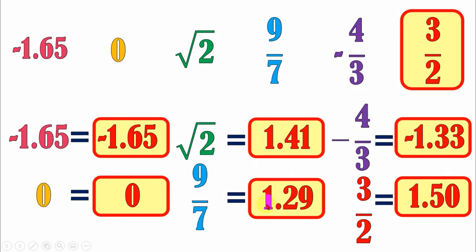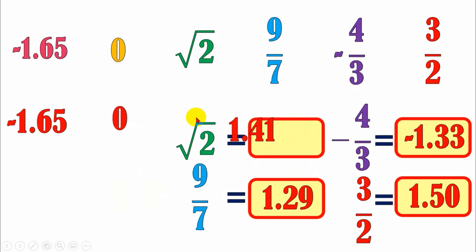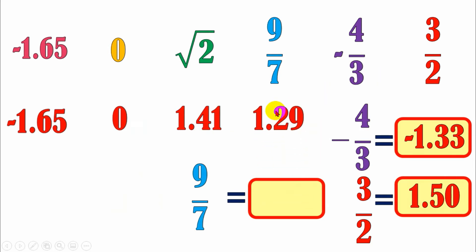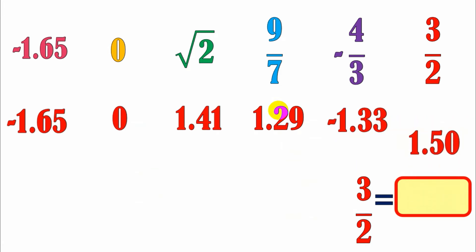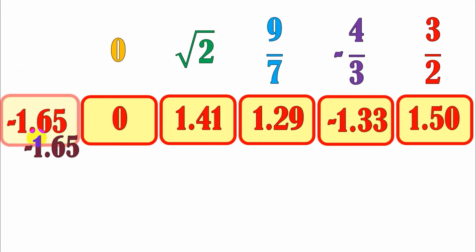After changing all of your real numbers into their decimal form, you are now ready to arrange them. I'll write the corresponding decimal form below each real number. Note: it is not the decimal numbers that we arrange — it is the original real numbers. We just changed them into decimal form so we can see who is the least and who is the highest. Judging by the decimal numbers, we see that negative 1.65 is the least, so it comes first in the arrangement.